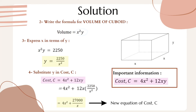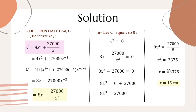Next, we write the formula for the volume of the cuboid and express y in terms of x. Since volume = x²y = 2250, we get y = 2250/x². Substituting y into the cost equation C = 4x² + 12xy gives C = 4x² + 27000/x.